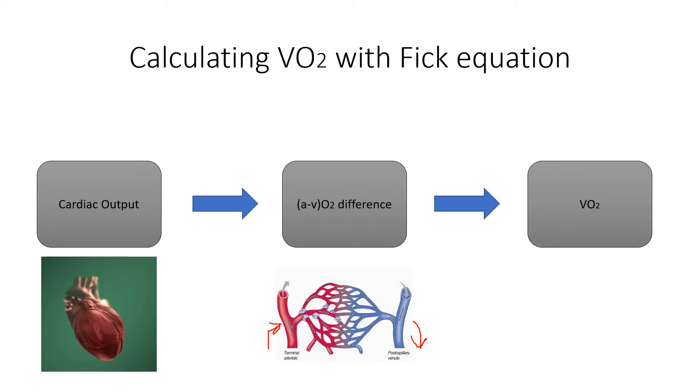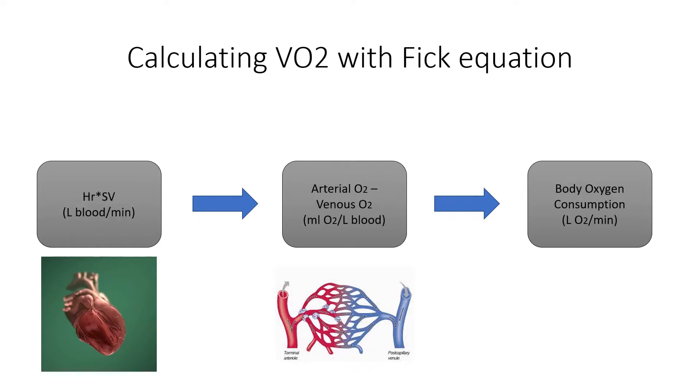This results in our VO2, which is our total oxygen consumption. A closer look at what that means. We have the heart rate in beats per minute, the number of times your heart beats each minute. Then we have the stroke volume.